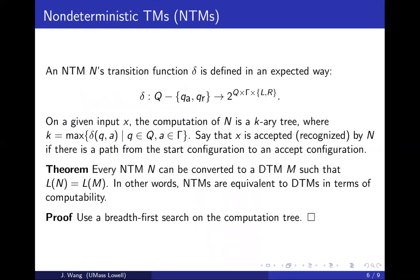Next we look at non-deterministic Turing machines (NTMs). An NTM's transition function is defined so that on a given state and tape symbol, you have more than one choice for the next state, the symbol to write, and the direction to move. This means the range of delta maps to a power set of possible next configurations.